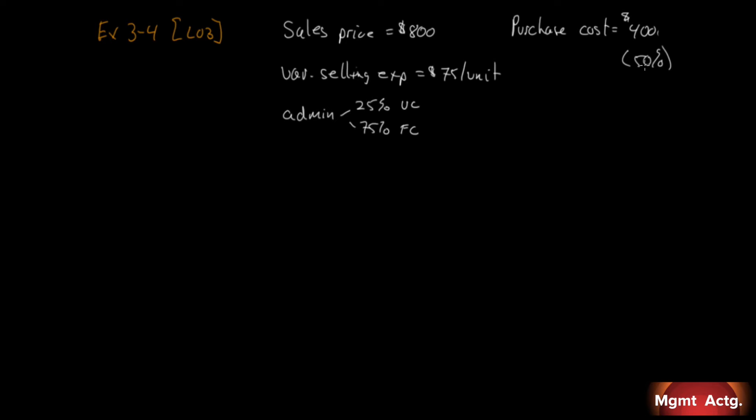The requirement is to prepare an income statement for the quarter using the contribution approach. The contribution approach breaks it down by cost type, not function. What does it always start with? Number one, always starts with sales. We have an income statement on the previous page; we need to turn it into contribution format. The first line is the same: $1,600,000.